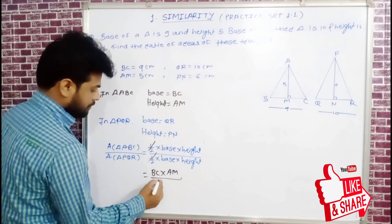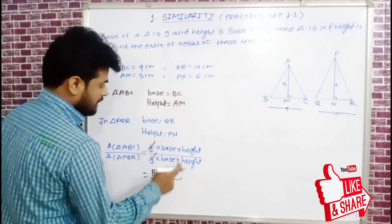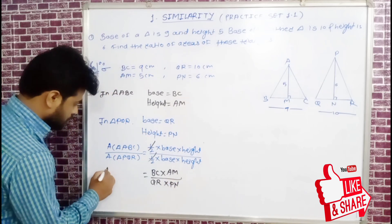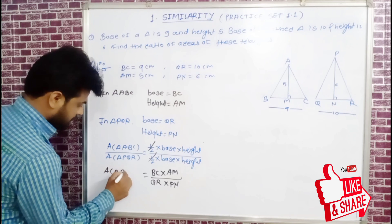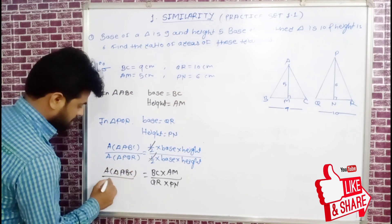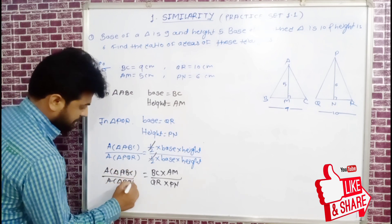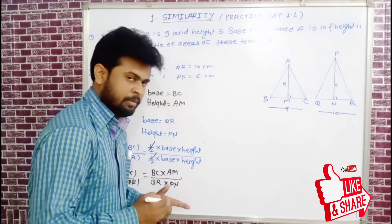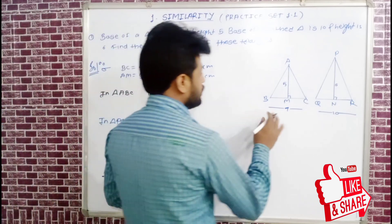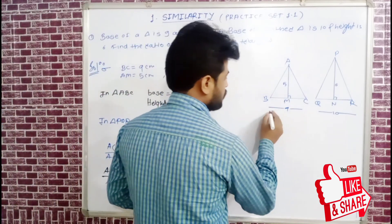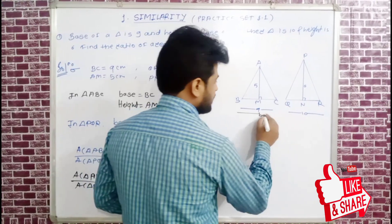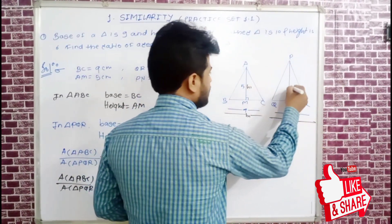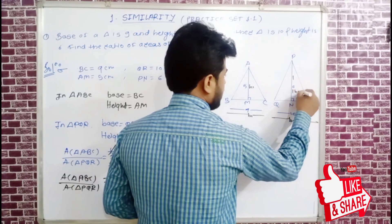The ratio becomes: area A1 to A2 = (BC × AM) to (QR × PM). Using the variables, we let B1 and H1 be the base and height of the first triangle, and B2 and H2 for the second triangle.